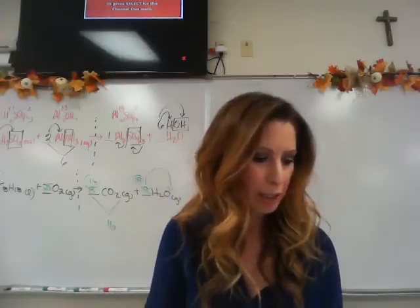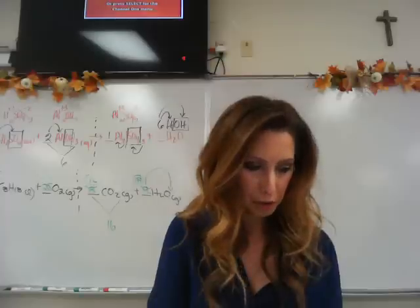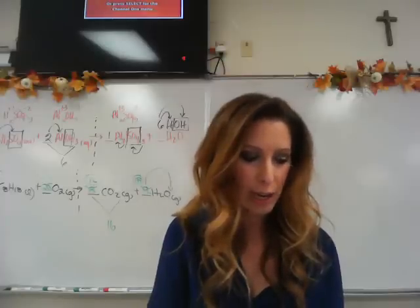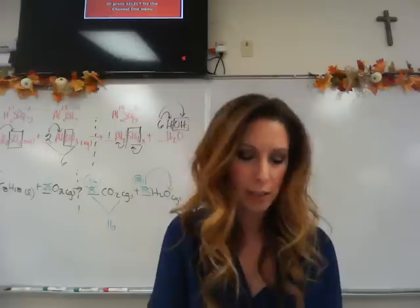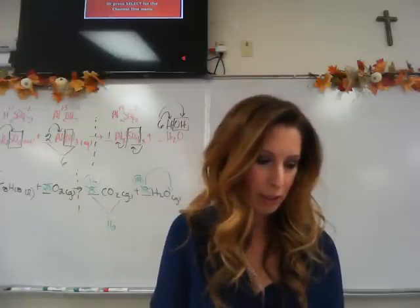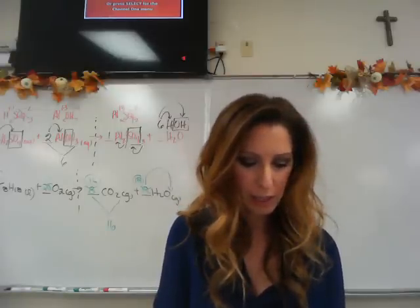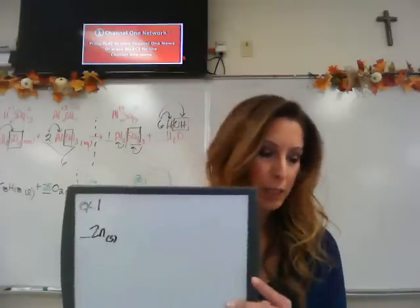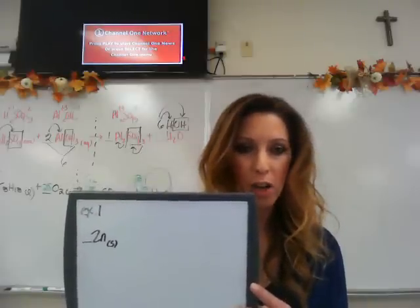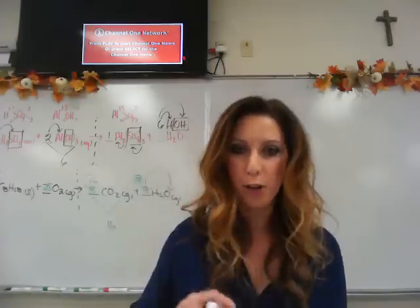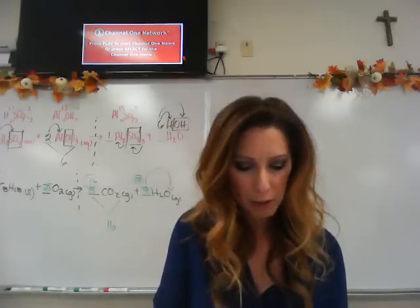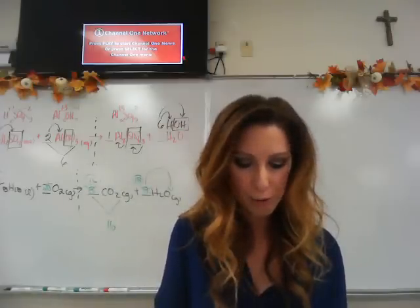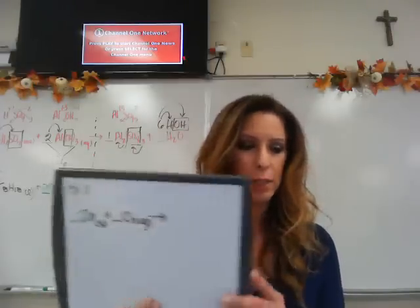So for example 1, write a balanced chemical equation for zinc metal heated with oxygen gas to yield a solid product. Okay, so zinc metal is Zn, so we're going to write Zn with a little s after it. It's heated with oxygen gas. Oxygen is highlighted on the periodic table. That means you have to include a subscript 2 after it because it's diatomic.